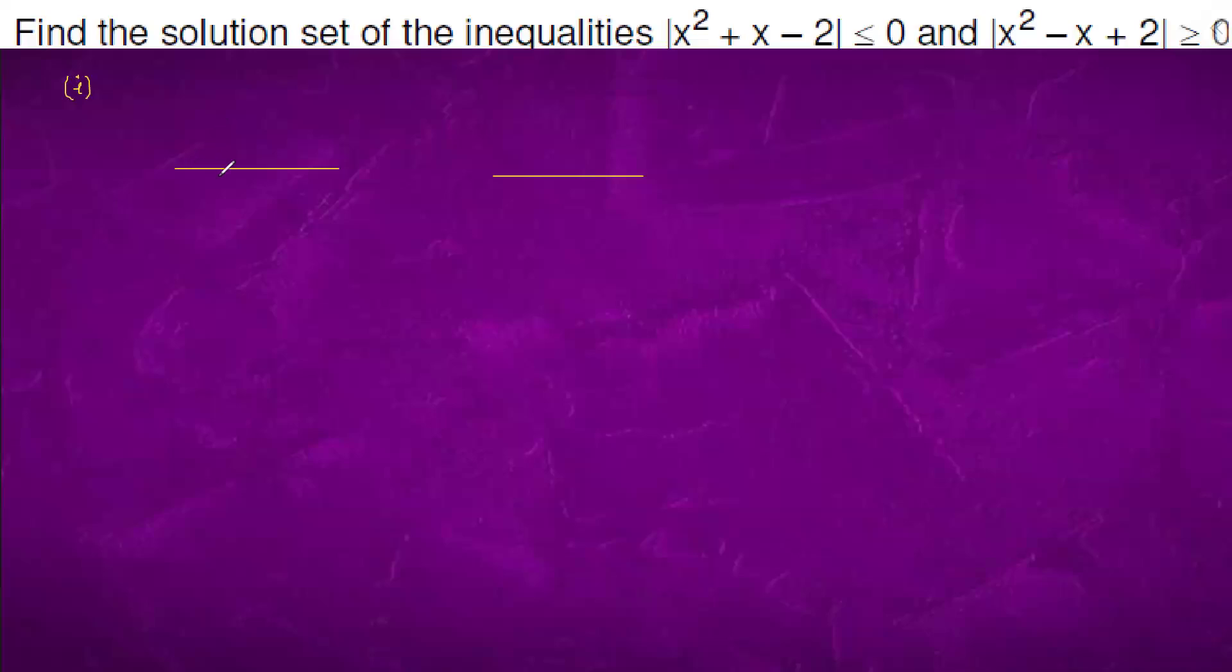So, one graph is this and one graph is this. We know that this is x squared plus x minus 2. So, one root is 2, one root is minus 2, one root is 1.